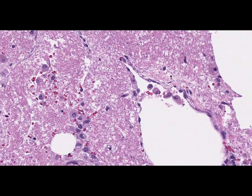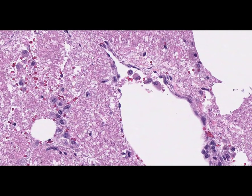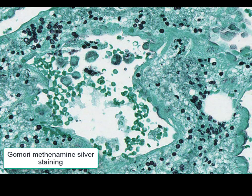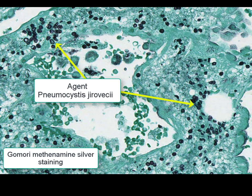In addition, the intraalveolar septa are thickened and moderately infiltrated by lymphocytes and histiocytes. Also, to confirm the diagnosis of pneumocystic pneumonia, a special stain can be applied — it is Gomori methenamine silver staining. When using this stain, the pathogens are colored in black.